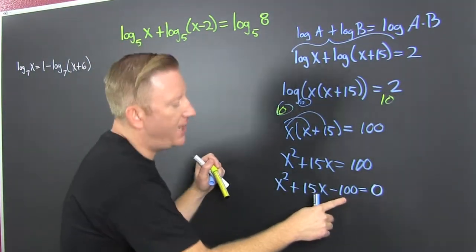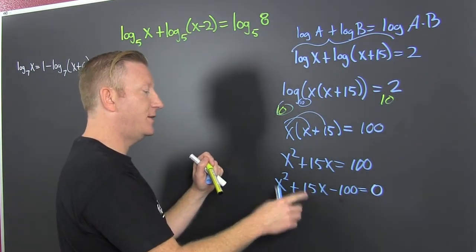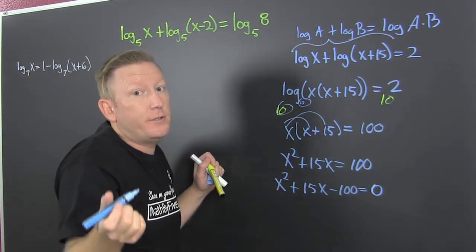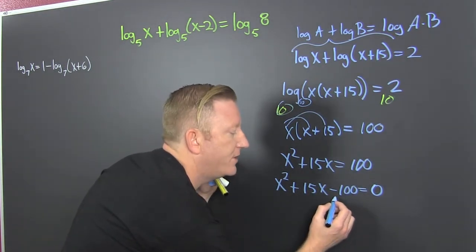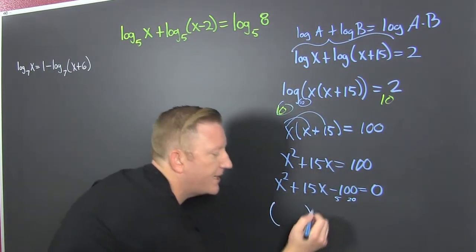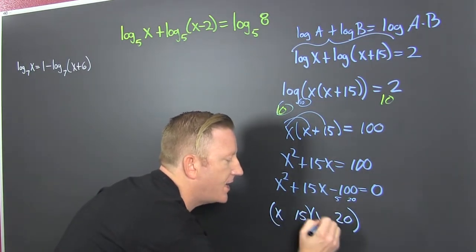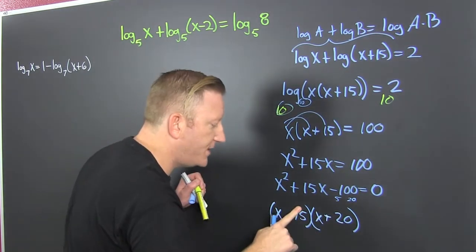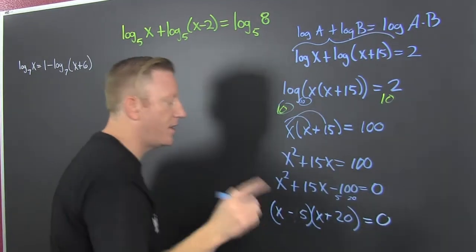Now what? We have to find the factors of 100 that subtract to be 15. Now, if you don't know, you can use the quadratic formula, but I'm guessing. Is it 4? 4 times 25? No, it's not 4. Is it 5? 5 times 20? You subtract. Yes, the goods. So you got to get that 20 and 15.